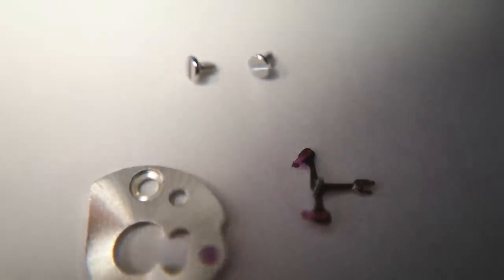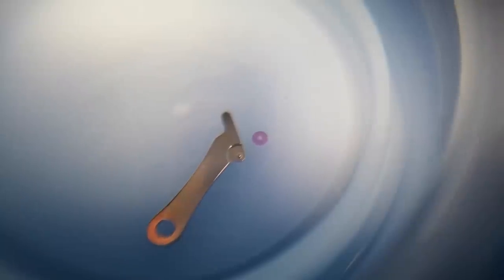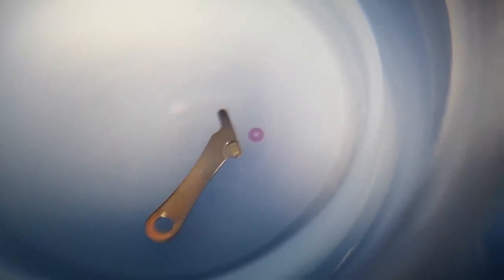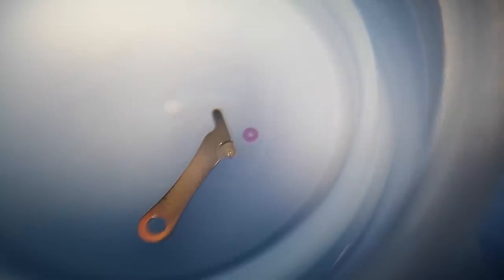Now the calendar works has a thing called an advancing wheel which has a cam underneath it, and that is held in place by this cam yoke and this tiny tiny little jewel that you can see there.